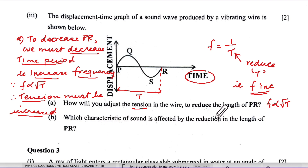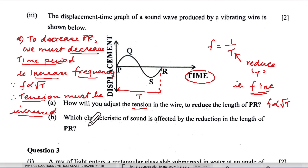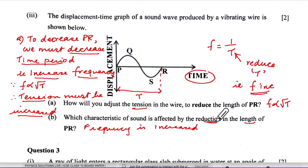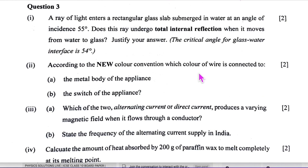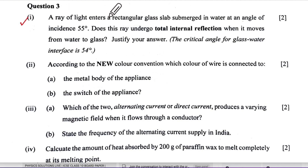Part b: which characteristic of sound is affected by reducing the length of PR? The time period decreases, so frequency increases. We cannot write 'time period' as a characteristic of sound, so the answer is frequency — and it increases. That completes question number 2.